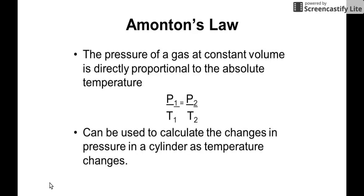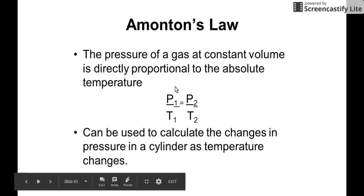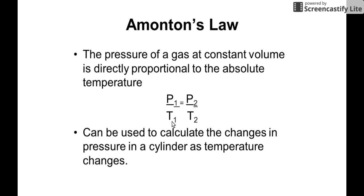In equation form, if we pattern Amonton's law same with Charles's law, when there is a direct relationship between two variables, the resulting chemical equation will be P1 over T1 equals P2 over T2. If you cross multiply that, P1 times T2 equals P2 times T1.